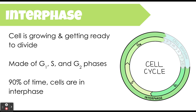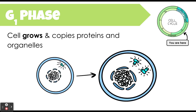The majority of the time, your cells are not going to be actively dividing. Most of the time they will be in a state called interphase. Interphase actually takes up three parts of the cell cycle: it's made up of the G1, S, and G2 phases. About 90% of the time, cells are in this interphase state. The G1 part of interphase is where the cell is growing — it copies all the proteins and organelles it has, and as a result the cell ends up getting much larger in size.